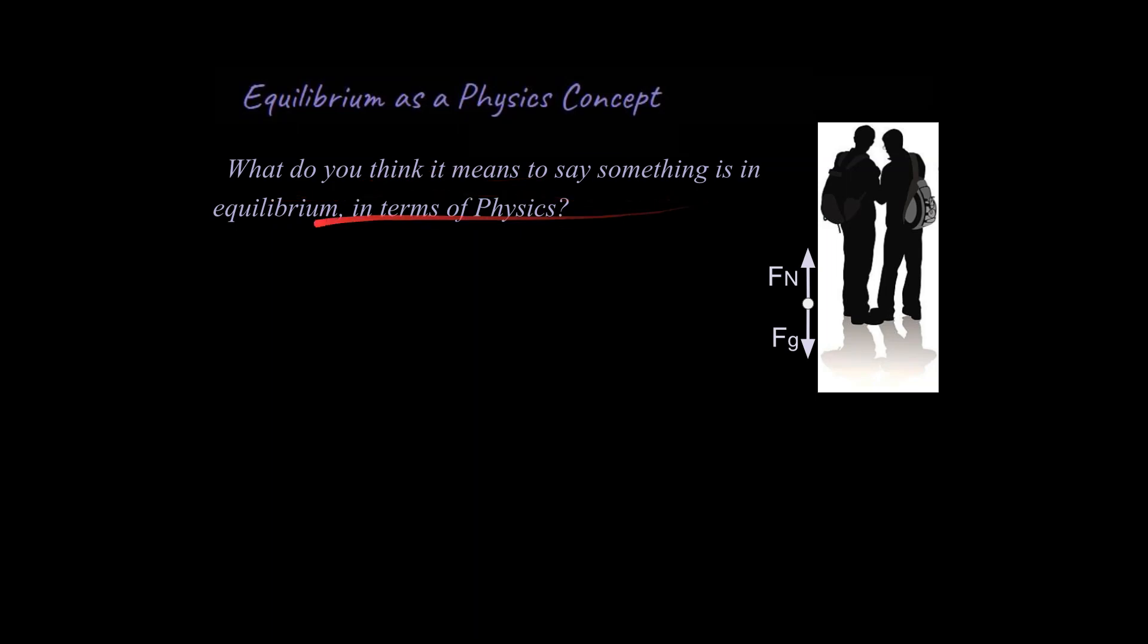First of all, what do you think it means to say something is in equilibrium in terms of physics? So if something's in equilibrium, what does that mean to you? Well, one really important idea with equilibrium in terms of physics is that the net force on an object is zero. So that's what's called the first condition of equilibrium.